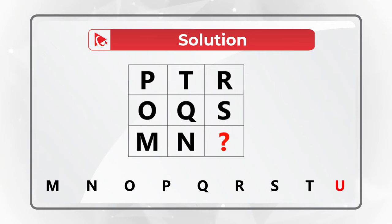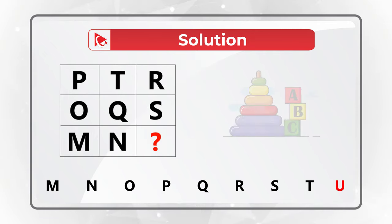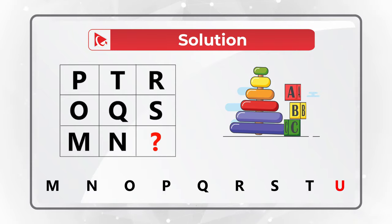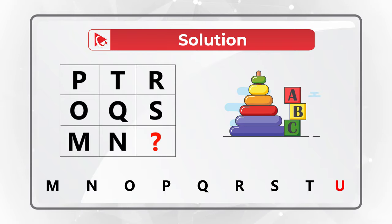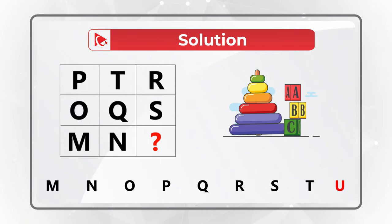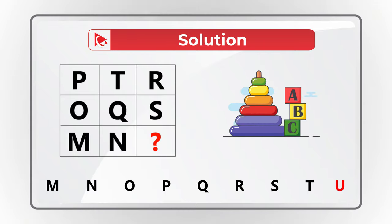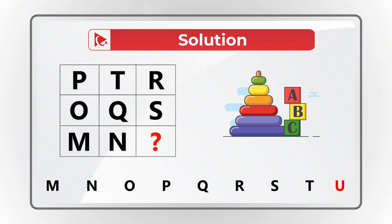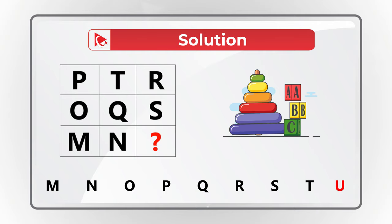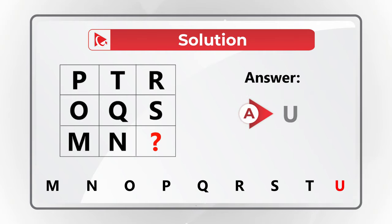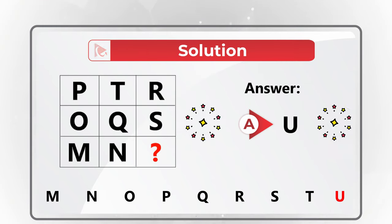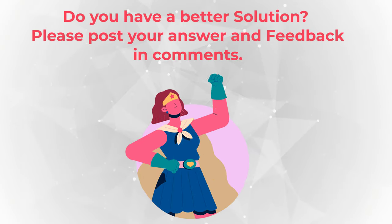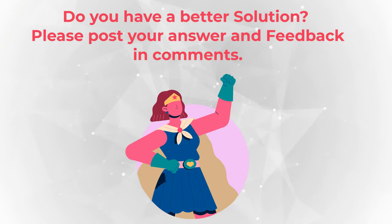To answer this question, you need to understand that starting from letter M, all consecutive letters appear in the matrix, and the missing letter in the sequence is letter U. Hopefully you've nailed this question and now know how to answer similar problems on the test.